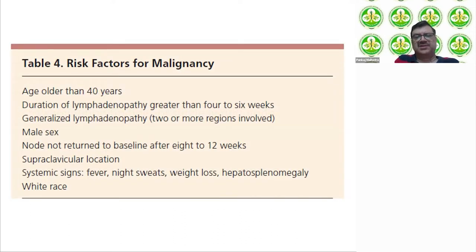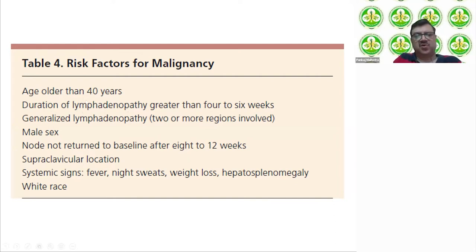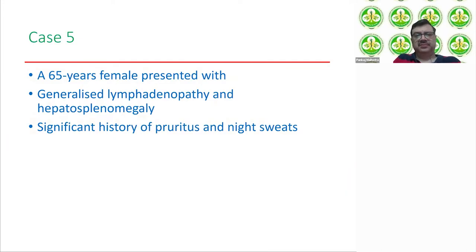Risk factors for malignancy include: age older than 40 years, duration of lymphadenopathy greater than four to six weeks, generalized lymphadenopathy, male sex, node not returning to baseline within two to three months, supraclavicular location, and systemic signs and symptoms like fever, night sweats, weight loss, and hepatosplenomegaly. For case five — a female with generalized lymphadenopathy — the clue is hepatosplenomegaly in addition to lymphadenopathy and presence of night sweats.